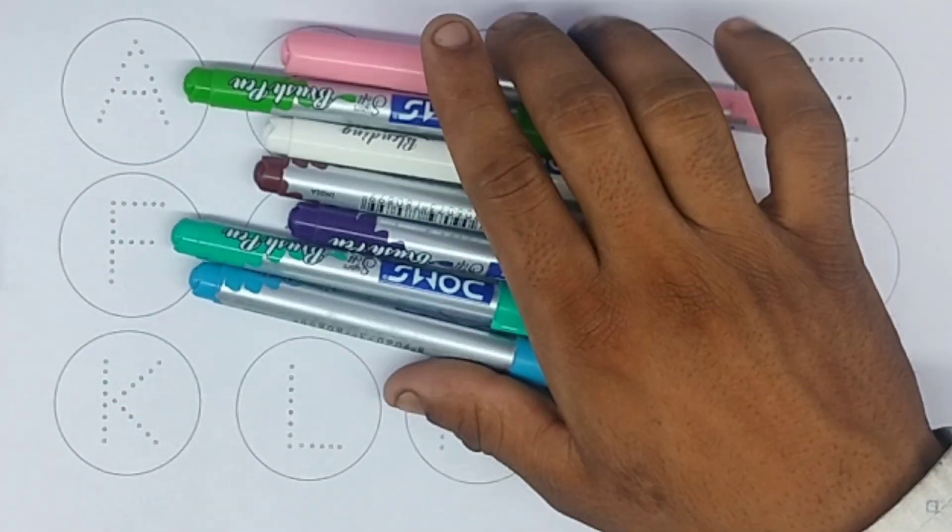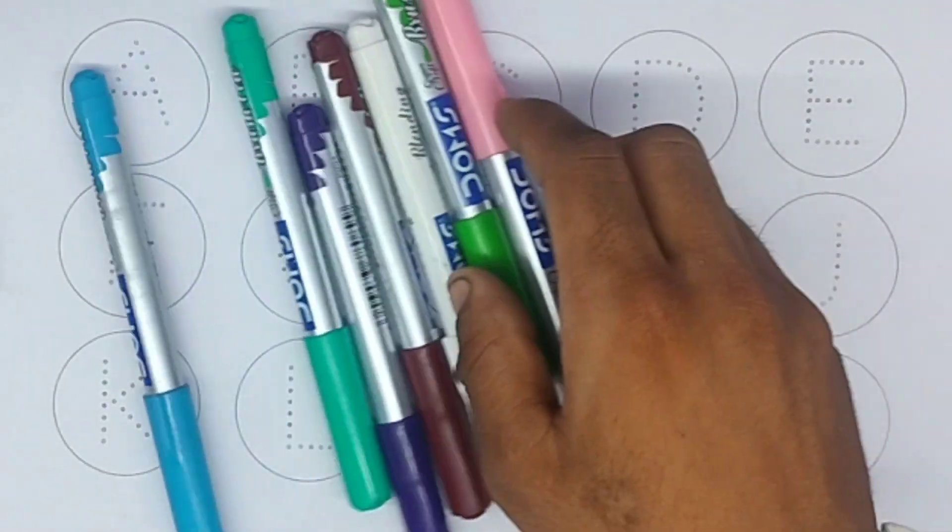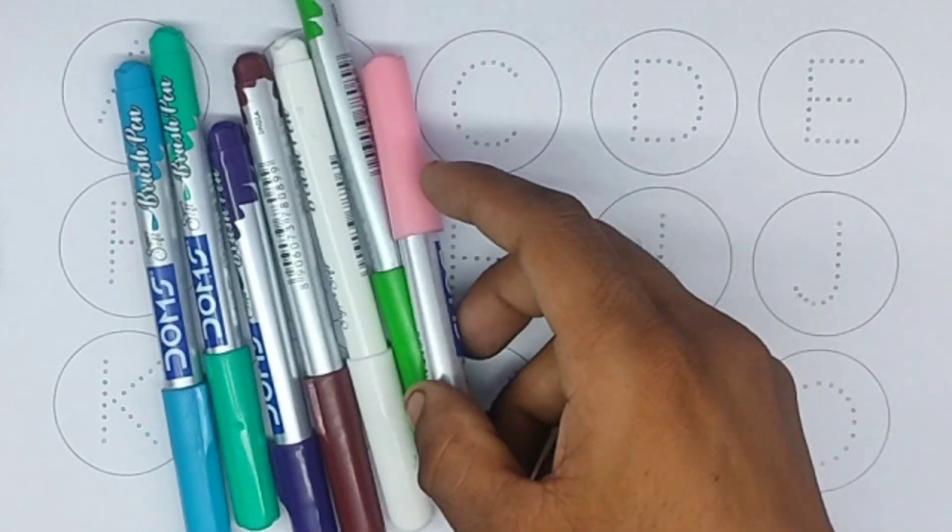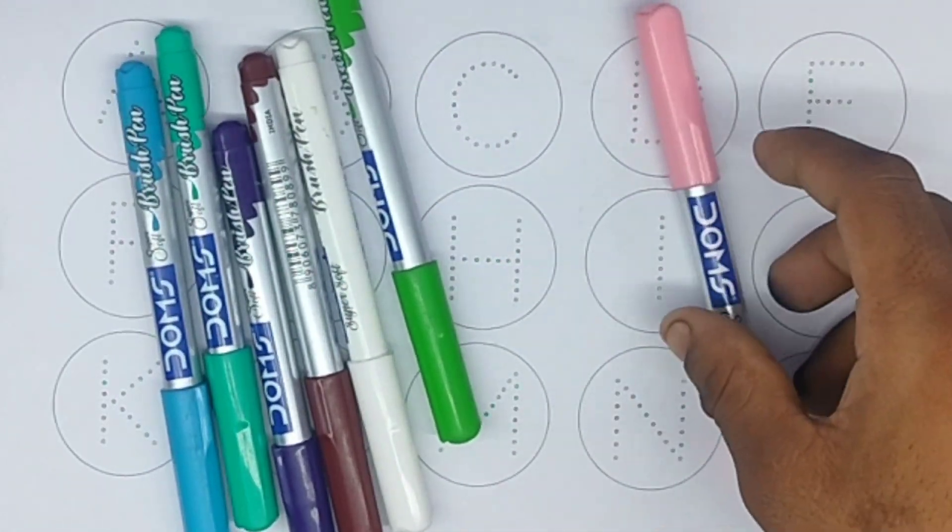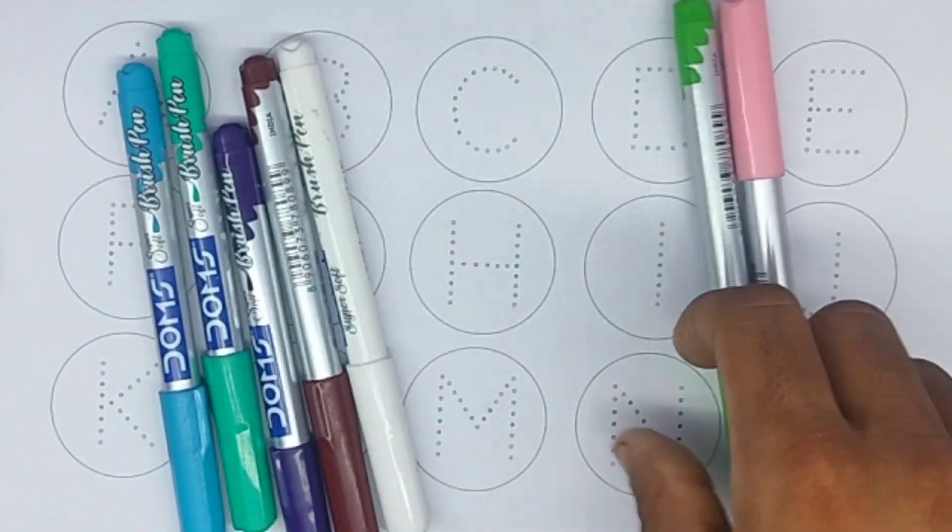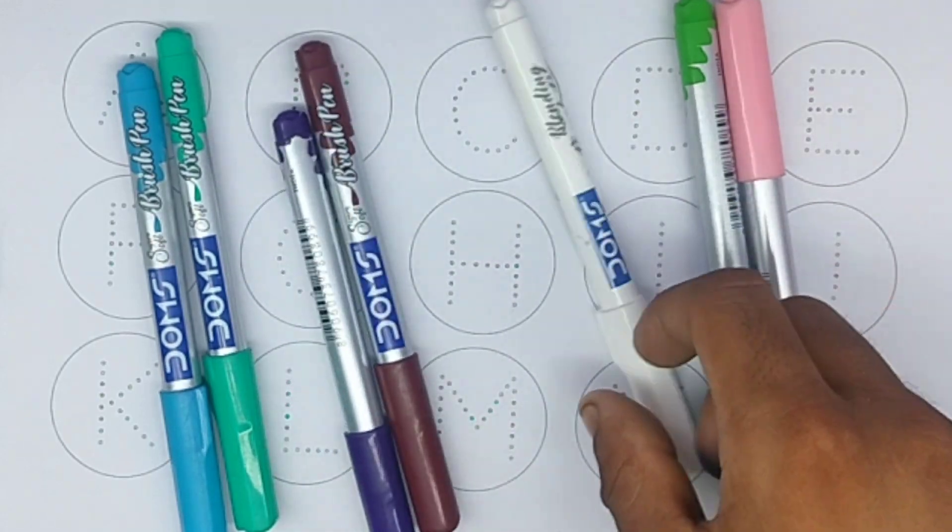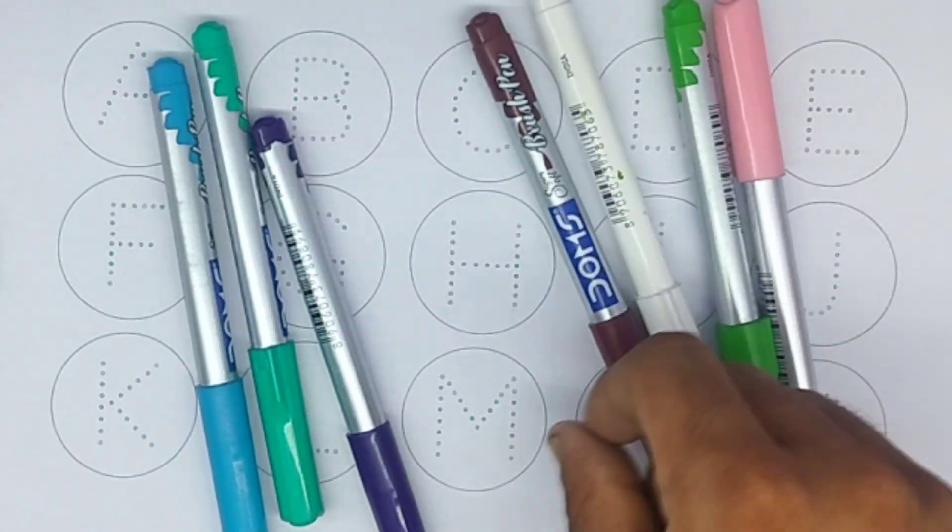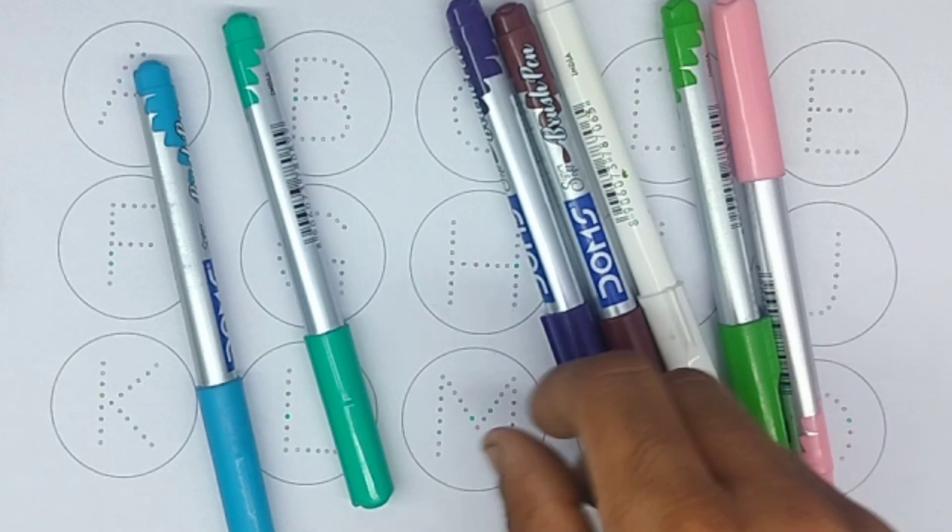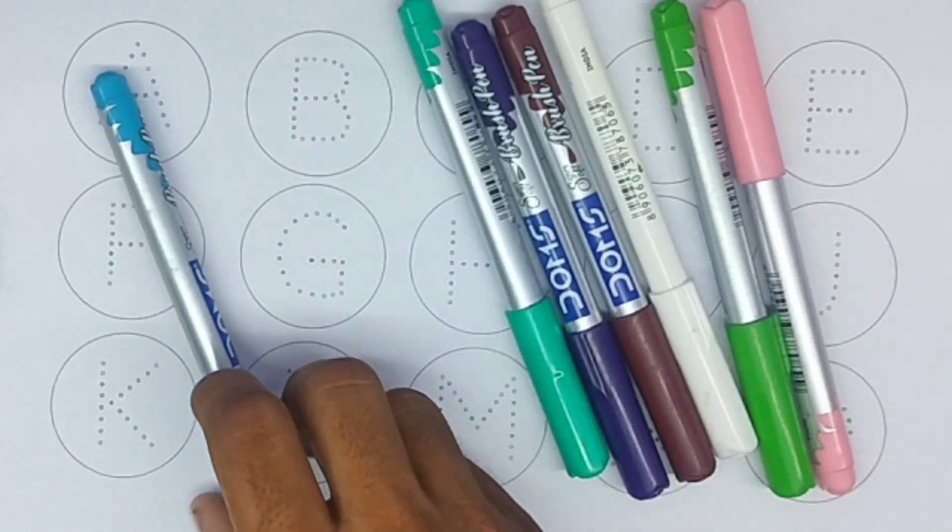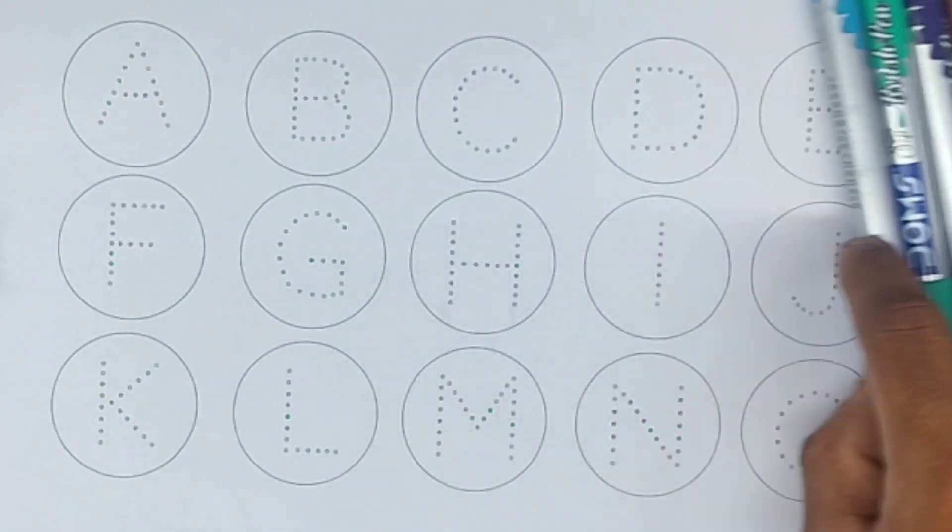Hello guys, today learn alphabet. Now colors name: light pink color, pirate color, white color, brown color, purple color, light green color, sky blue color.